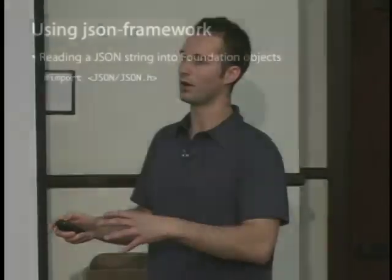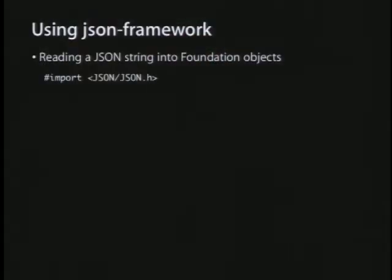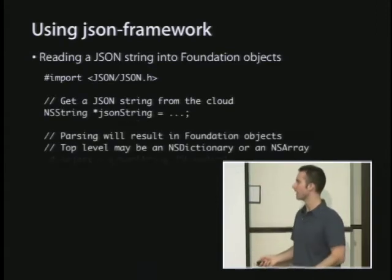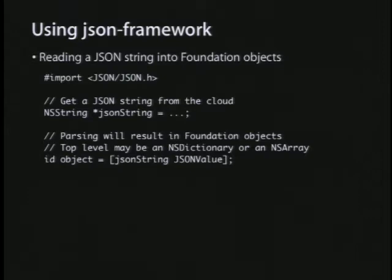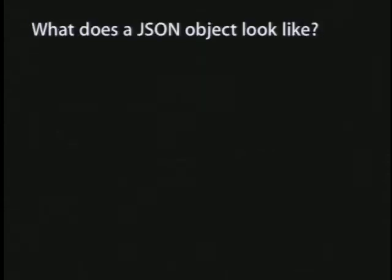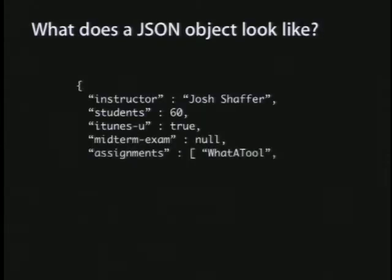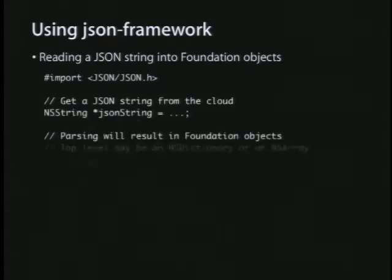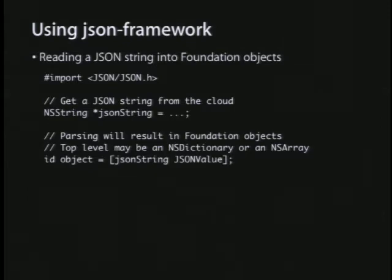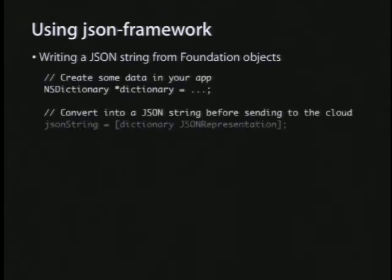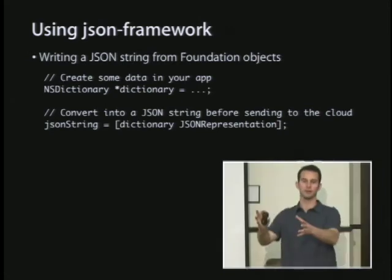Google and Yahoo have services that vend JSON. The JSON framework converts JSON string data into Cocoa property list types. For example, you pull down data from Google, take that string, pass it to the JSON framework by calling JSONValue on it, and get back an NSDictionary. Similarly, you can write JSON out by calling JSONString on your dictionary, which turns your potentially recursive dictionary of objects into one string you can ship across the internet to your server.